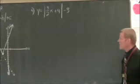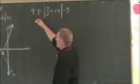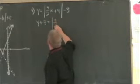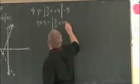And again, the first step is to isolate that absolute value. So I'm going to add 3 to both sides. That gives me y plus 3 equals the absolute value of 3 halves x plus 4.